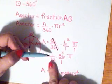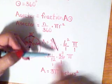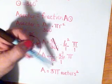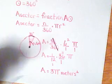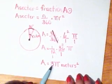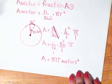And then 3 over 36 reduces to 1 over 12. Then I can divide 12 into 36 and get 3. So my area exactly of that sector would be 3 pi meters squared.